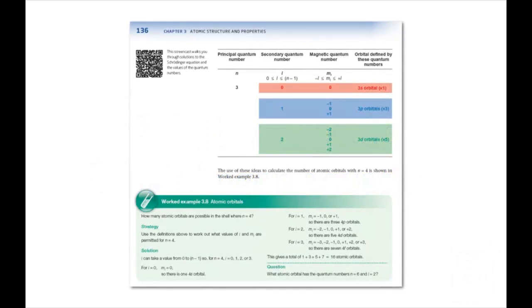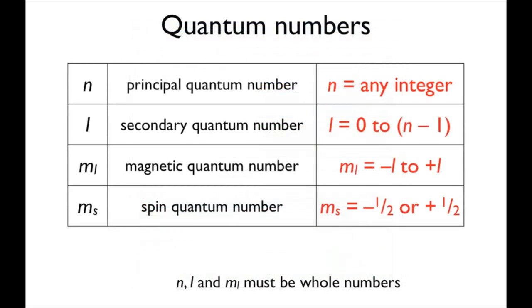In this screencast, we're going to look at the quantum numbers that come out of the Schrödinger equation and see how these relate to the atomic orbitals that are possible. There are three quantum numbers that are used to uniquely define each atomic orbital and a fourth one that describes the electron spin in an orbital.